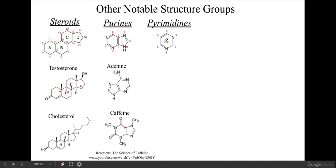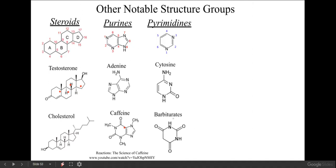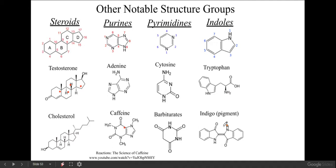Pyrimidines - very similar to purines, but just one ring. Cytosine - so we have DNA base pairs. And barbiturates, which are usually a class of controlled drugs but are also found in some pharmaceutical components. Indole rings - tryptophan is one of the amino acids, and indigo is a very common pigment for things like jeans and other blue things. I just gave two examples for each, but you could look up hundreds of different compounds, many familiar to you, that have these structures. There are definitely other ones too.